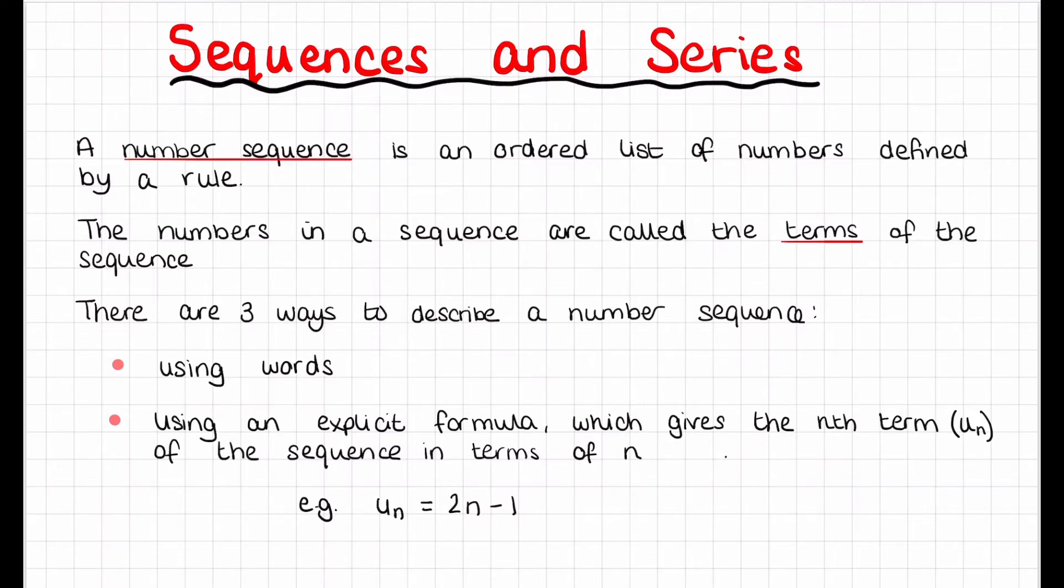To find u10, we set n = 10, so we have 2 times 10 minus 1, which gives us 19. In this sequence, u10, the 10th term, equals 19.